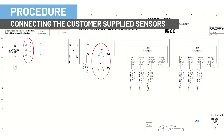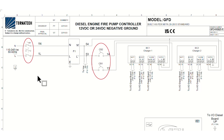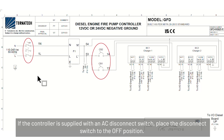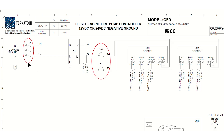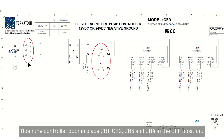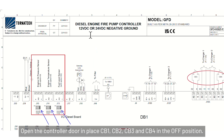Procedure: connecting the customer-supplied sensors. If the controller is supplied with an AC disconnect switch, place the disconnect switch to the off position. Open the controller door and place CB1, CB2, CB3, and CB4 in the off position.